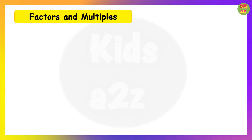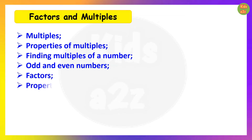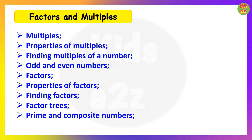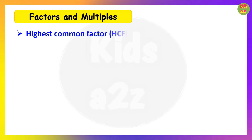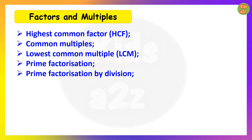The next chapter is Factors and Multiples. Under this chapter they will learn multiples, properties of multiples, finding multiples of a number, odd and even numbers — a number which is a multiple of two is called an even number and a number which is not a multiple of two is called an odd number — factors, properties of factors, finding factors, factor trees, prime and composite numbers, common factors, Highest Common Factor (HCF), common multiples, Lowest Common Multiple (LCM), prime factorization, and HCF by prime factorization.